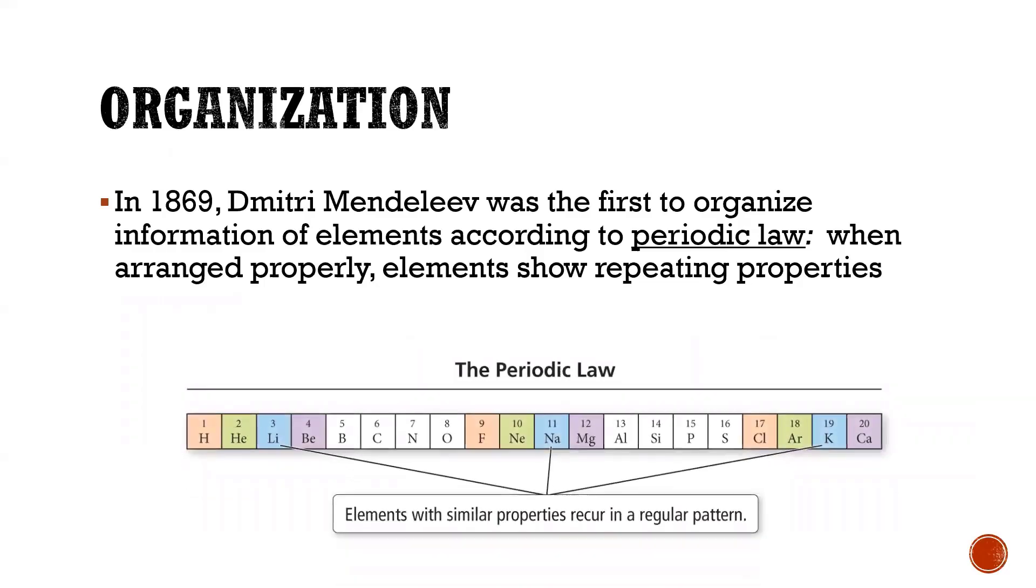So here was the periodic law. He took all the elements that he was studying and he just put them in a kind of a straight line and saw that some of the elements had really similar properties and their physical and chemical properties kind of matched up.